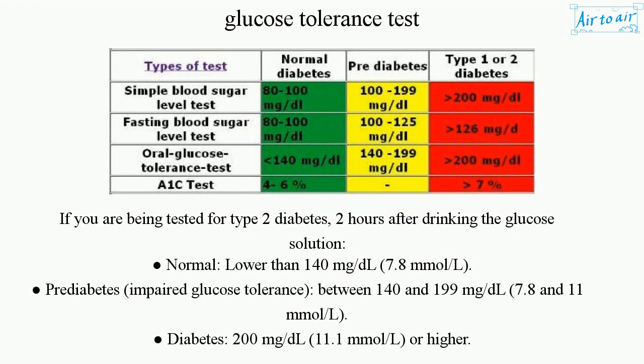If you are being tested for type 2 diabetes, 2 hours after drinking the glucose solution: Normal is lower than 140 mg per deciliter (7.8 mmol/L). Prediabetes — Impaired Glucose Tolerance — is between 140 and 199 mg per deciliter (7.8 and 11 mmol/L). Diabetes is 200 mg per deciliter (11.1 mmol/L) or higher.